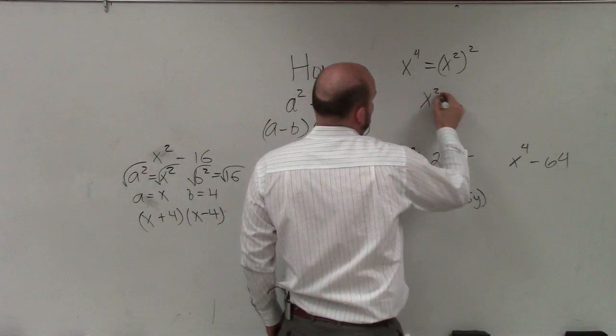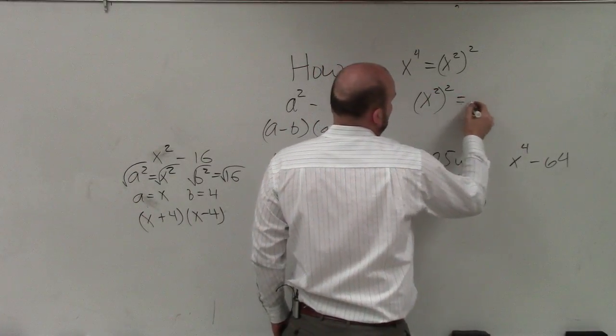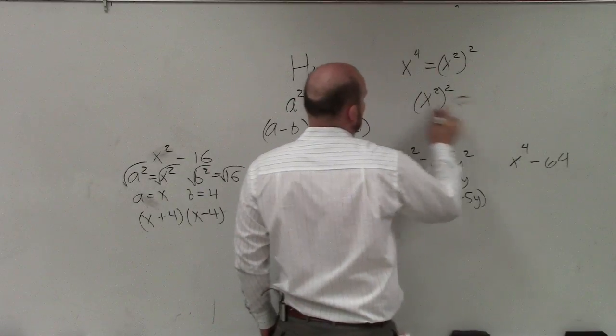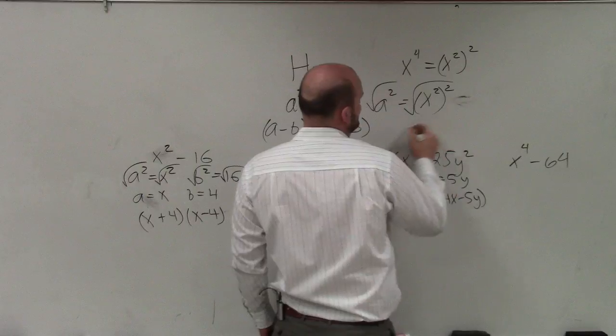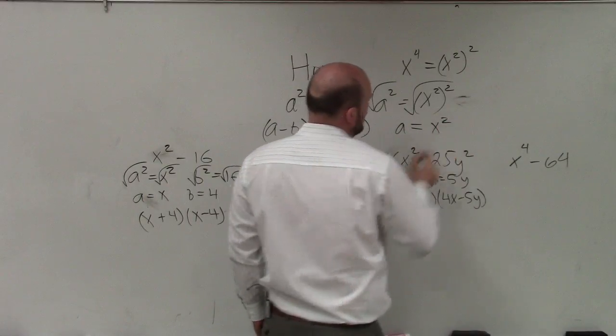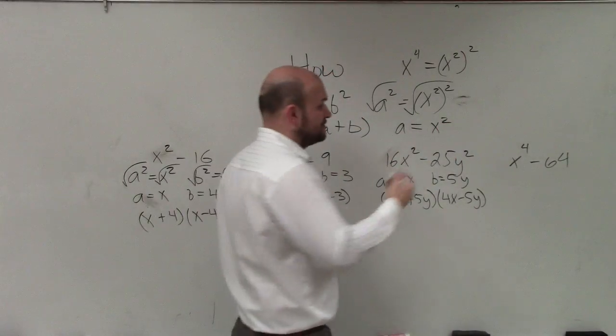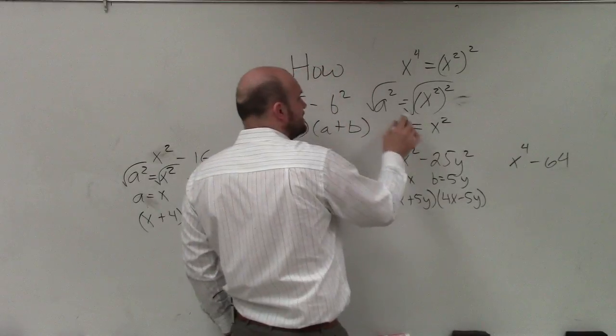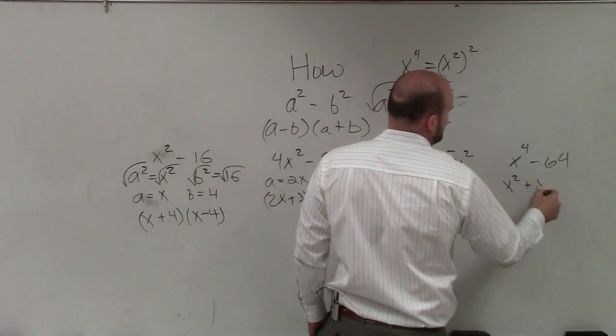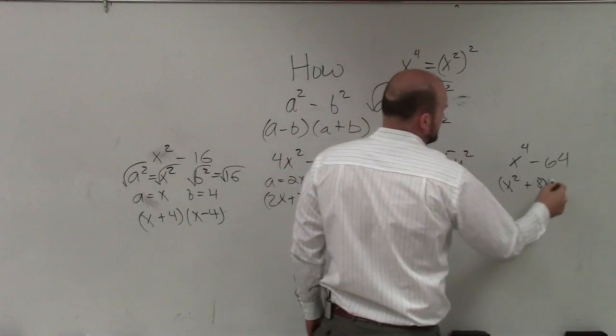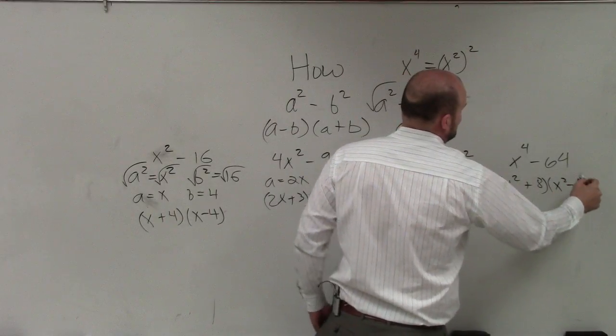So if I rewrote this as x squared squared equals a squared, when I take the square root of this, I'm just left with a equals x squared. So now my a is x squared. So this one would be x squared plus the square root of 64 is 8, times x squared minus 8.